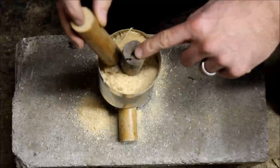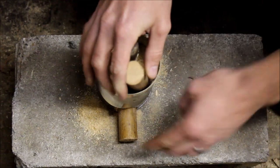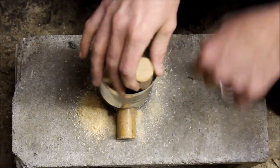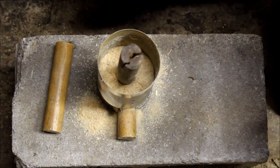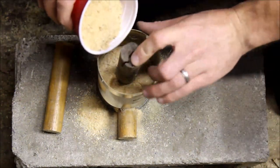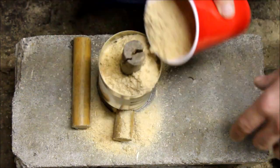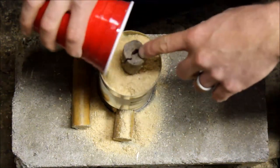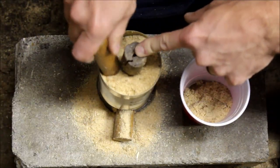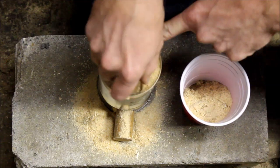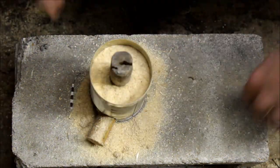And then what you want to do is with another dowel, just kind of compact it in. Make sure everything's nice and tight in there and compact that sawdust. And you just keep repeating that until you fill it up to the level that you want. And that's usually about where I stop.